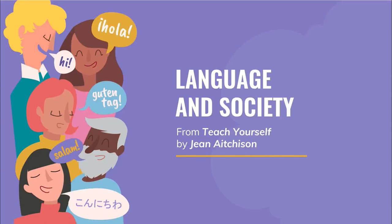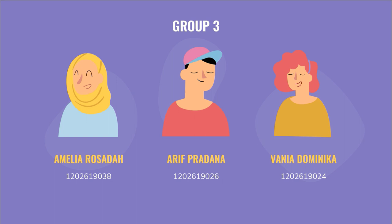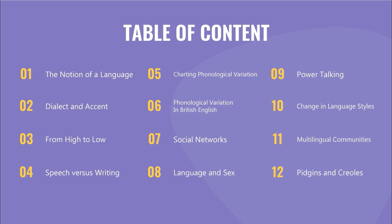Hello everyone, welcome back to this channel. Today we are going to talk about sociolinguistics, or language and society. We are from group three. My name is Vanya Dominica, and I'm working together with my friends Amelia Rosada and Arif Pradana. There are 12 topics that will be discussed in this PowerPoint: the notion of language, dialect and accent, from high to low, speech versus writing, charting phonological variation, phonological variation in British English, social networks, language and sex, power talking, change in language styles, multilingual communities, and last, pidgins and creoles.